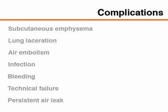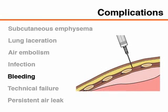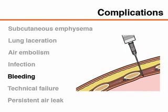Minor complications from needle aspiration of primary spontaneous pneumothorax include localized subcutaneous emphysema. Although serious complications are rare, lung maceration, air embolism, infection, or bleeding may occur. You can minimize the risk of bleeding by placing the catheter at the intercostal space just above the third rib, thereby preventing injuries to the intercostal vessels.